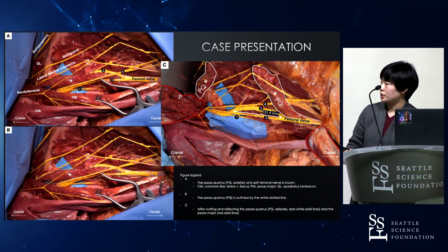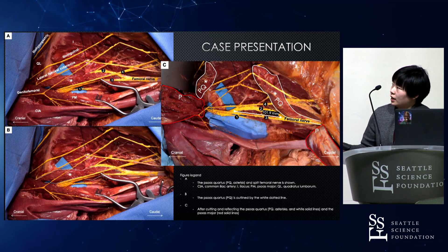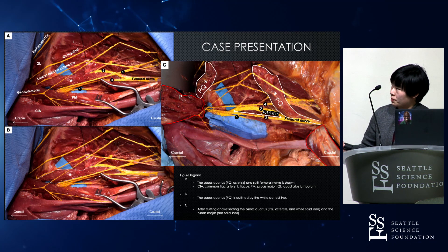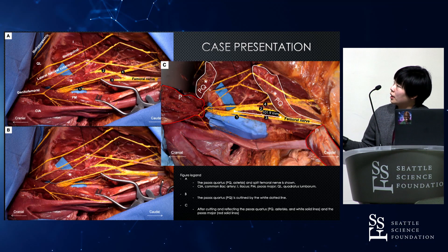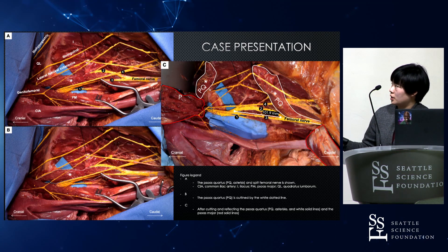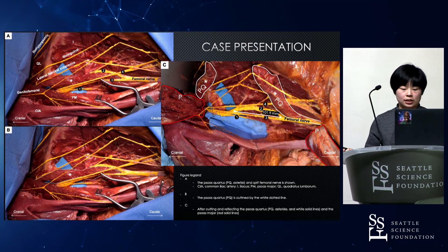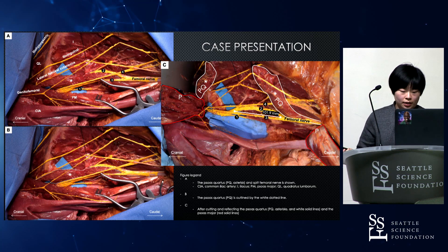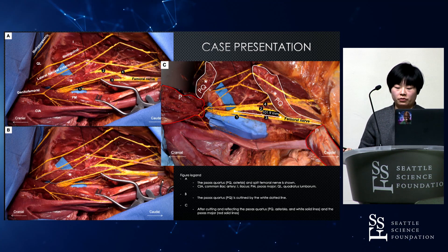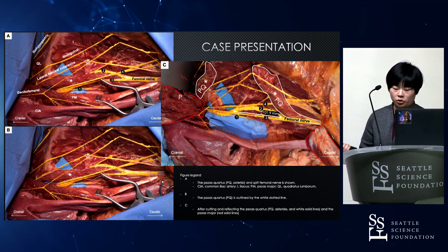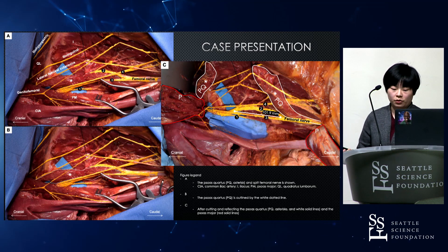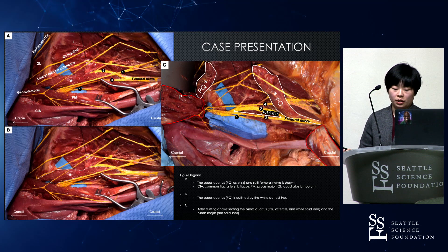This is the case presentation. Figure A has all the nerve locations of the variant muscle. In picture B, it has an outlined variant muscle. In picture C, we cut the variant muscle and the psoas major to show the course of the split of the femoral nerve. This is a 71-year-old female cadaver. A variant muscle on the left side was observed to split the femoral nerve into multiple parts. This muscle originated from the anterior medial surface of the quadratus lumborum and ran distally to fuse with the tendon of the psoas major at the level of the inguinal ligament.